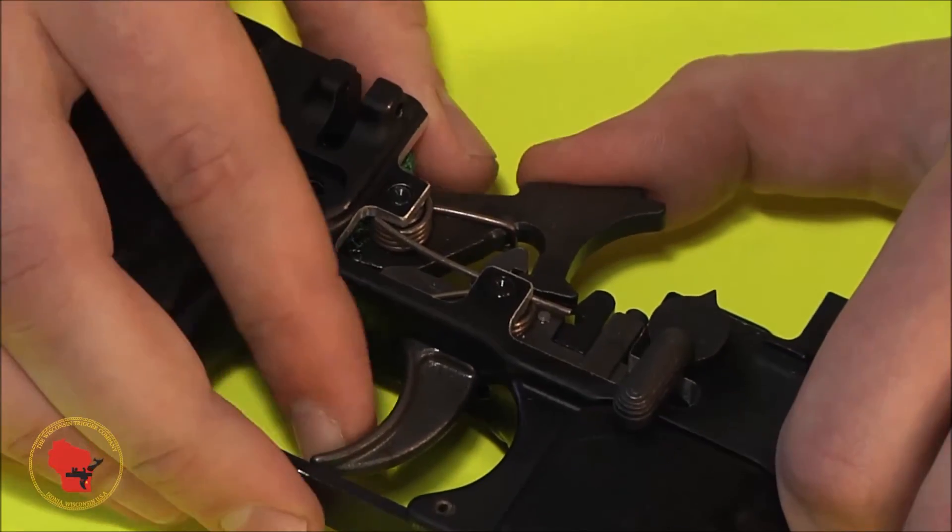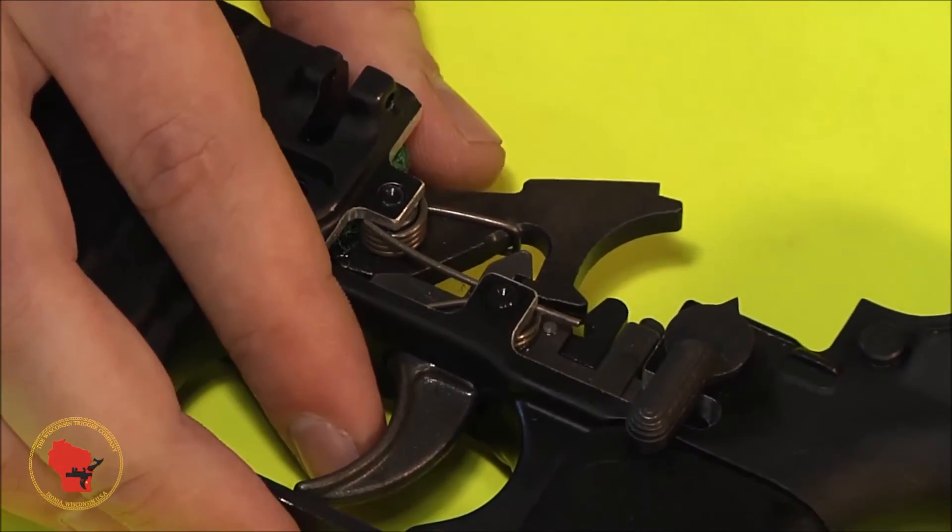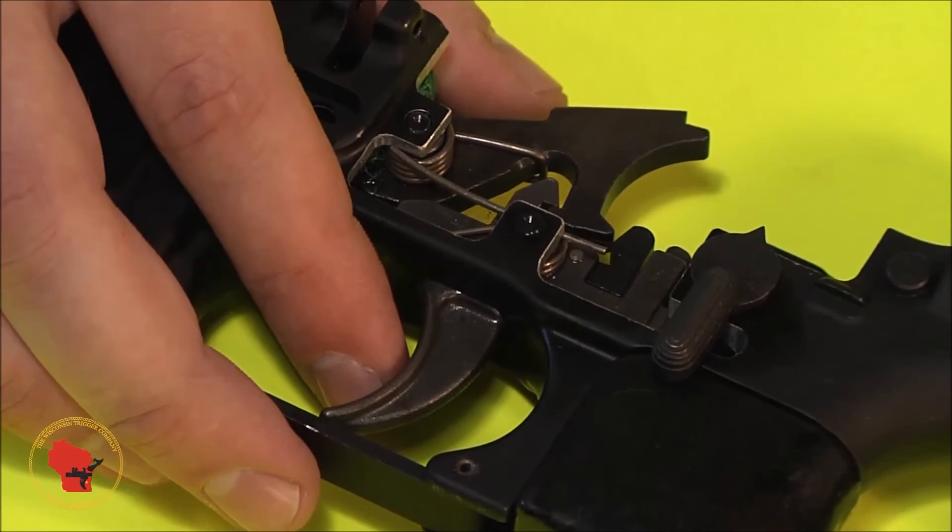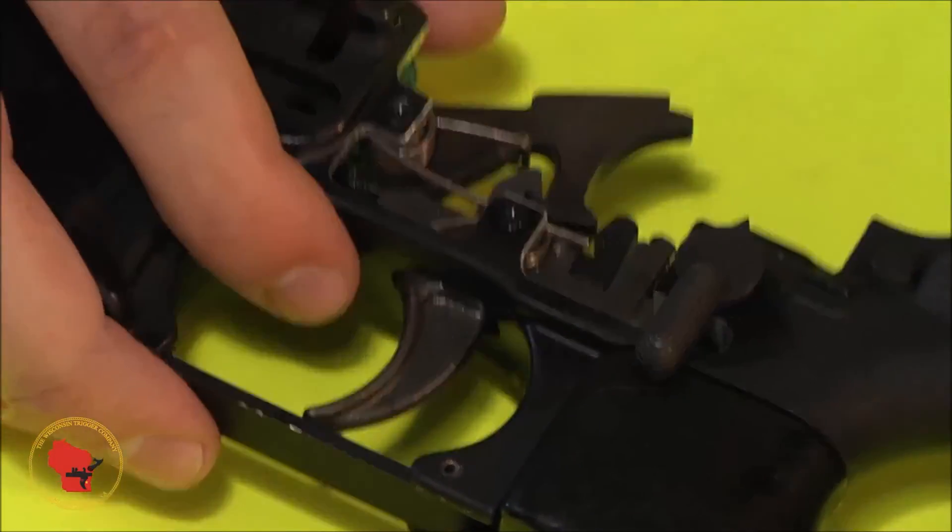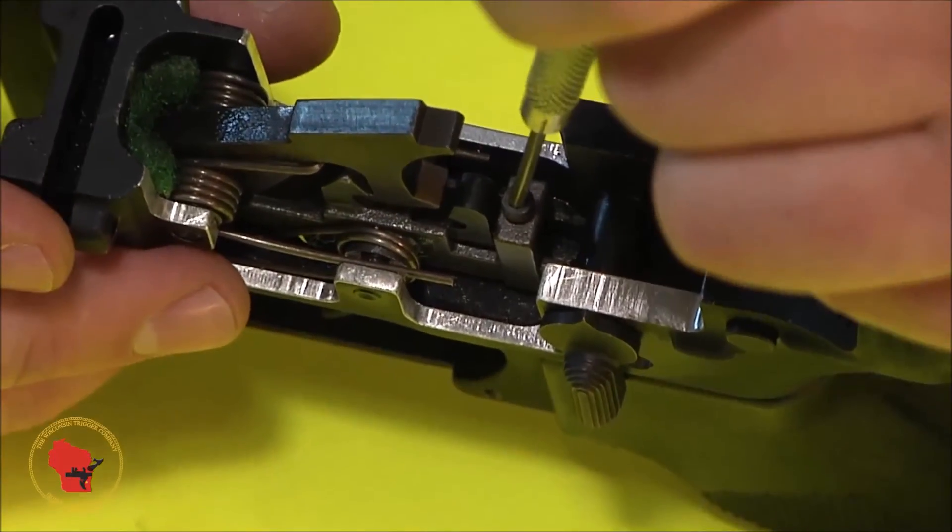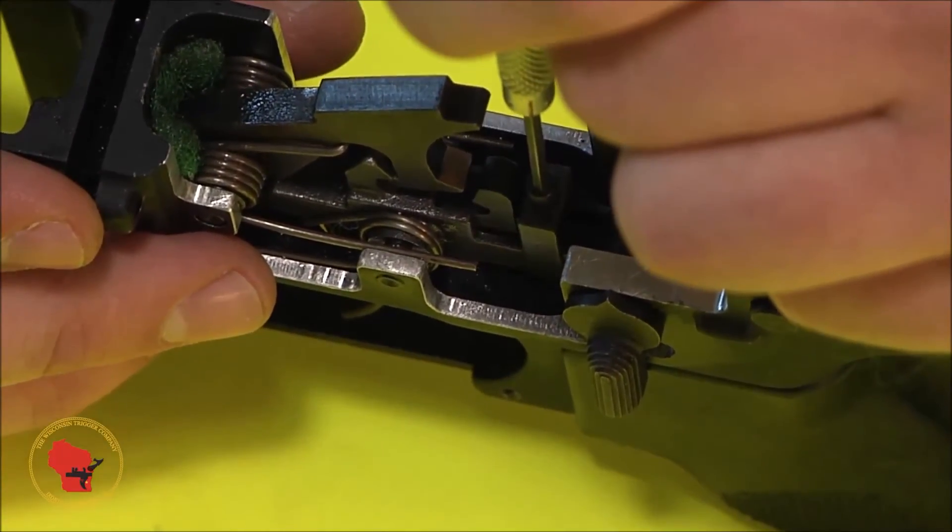You can see at this point, I have lost my second stage. It is falling with zero contact on the disconnector. At this point, what you're going to want to do is take your Allen wrench and now turn your screw out three-eighths of a turn.